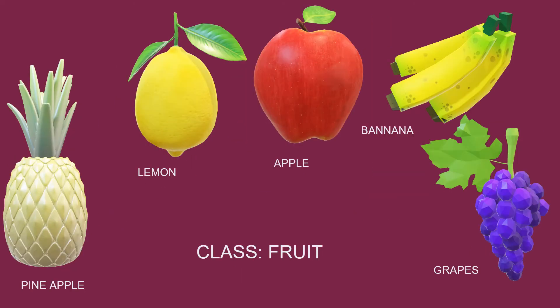Similarly, lemon, apple, banana and grapes all belong to class fruit and have different states and behavior. Grapes have different states like color, shape, size and behavior like its cost as compared to the other fruits.